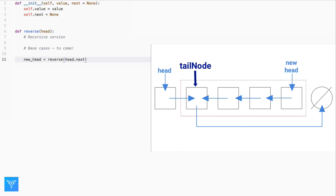We have two things we want to do now. Make tailNode's next pointer point back to head and make head's next pointer point to null to indicate it's the end of the new list. So tailNode.next points to head and head.next points to none.